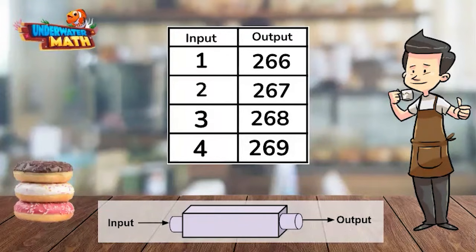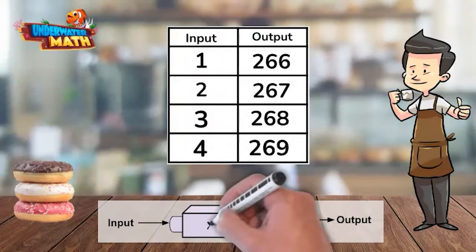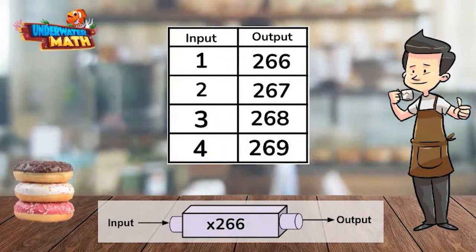What rule is happening in this machine for these inputs? We can ask ourselves, how are we getting from 1 to 266? We can either add 265 or multiply by 266. If we multiply the second input by 266, we do not get an output of 267. This can't be the rule. If we add 265 to 1, we get 266.